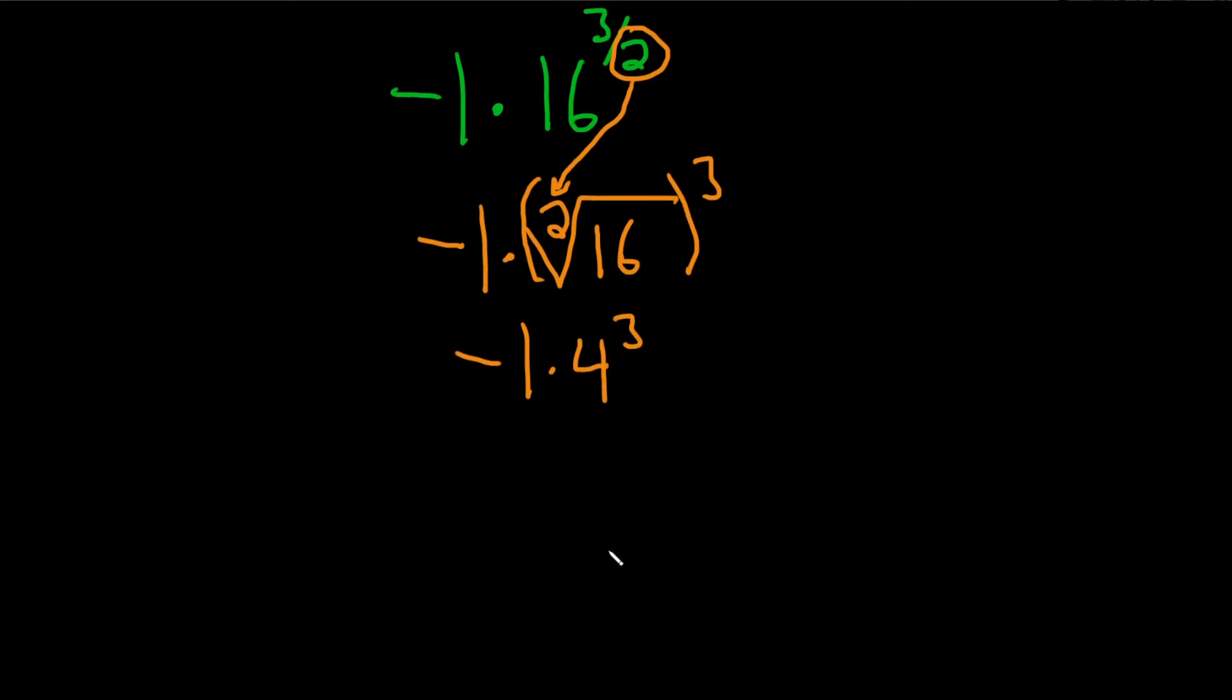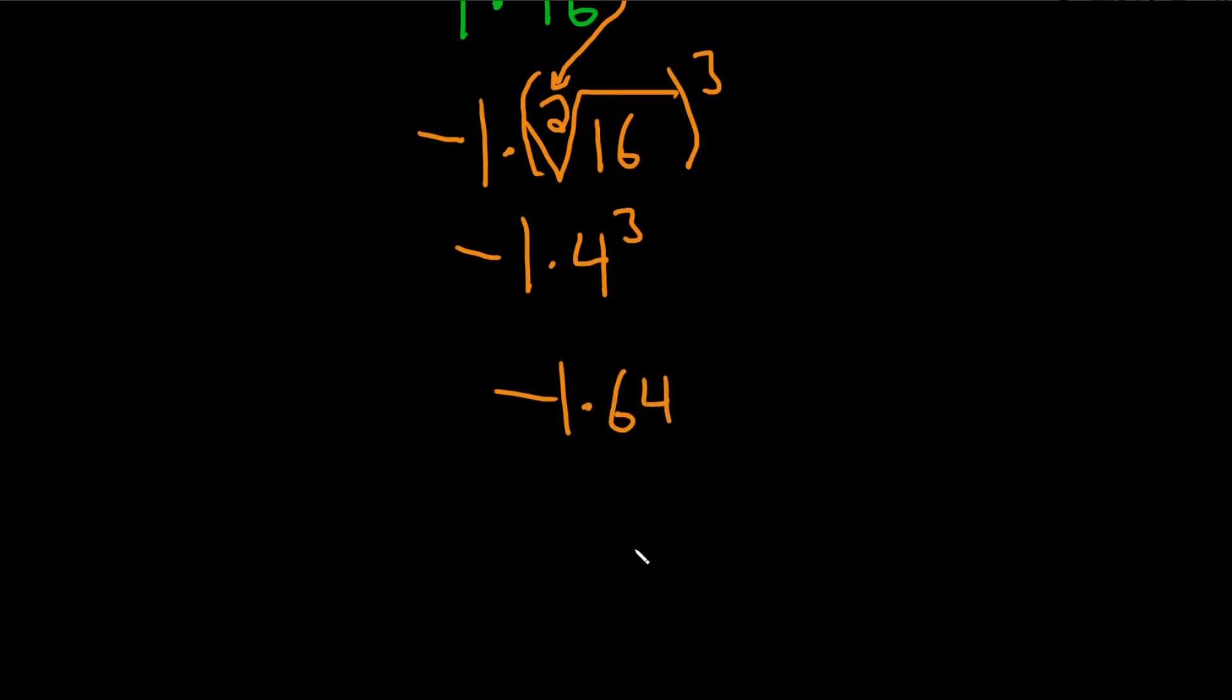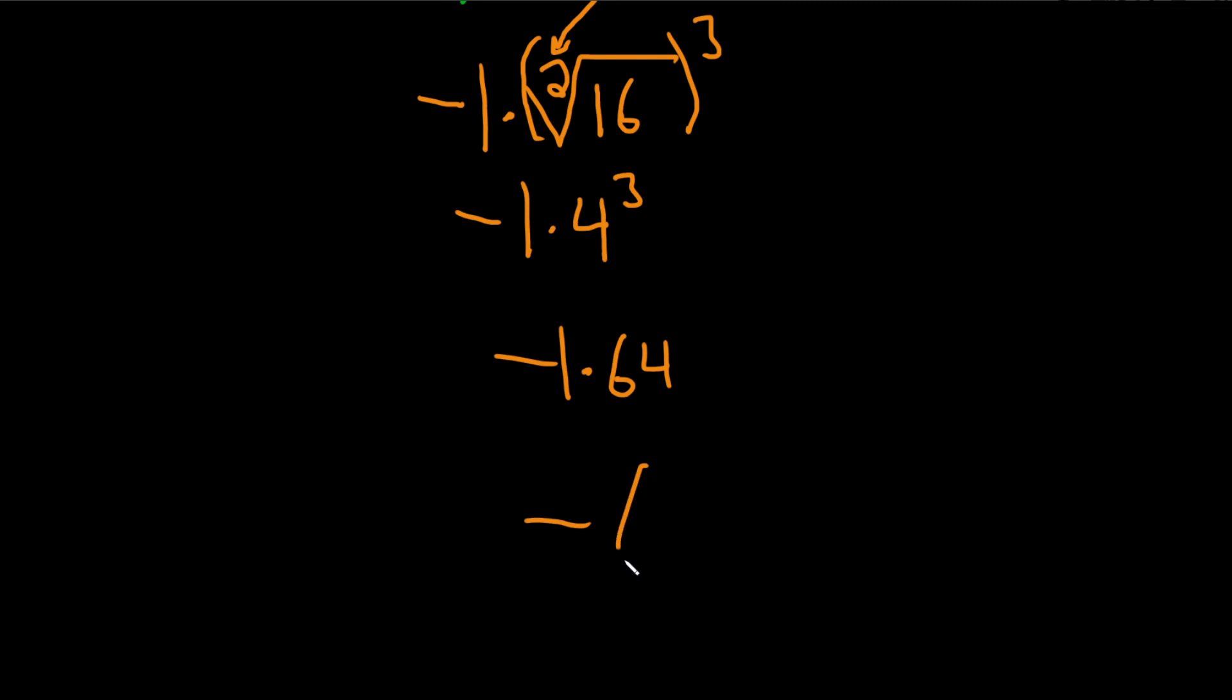So this is going to be negative 1 times. 4 cubed is 64. So we just get negative 64 as our final answer.